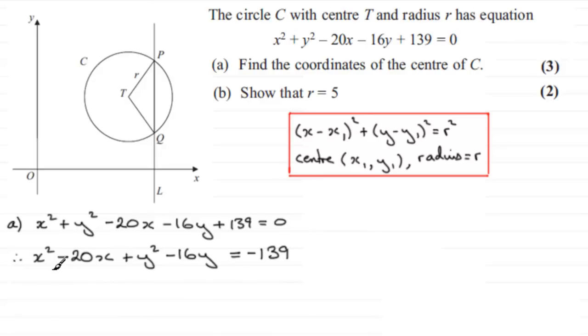But what we do next is we complete the square for these first two terms here, and we complete the square for these two terms here. And again, I'm assuming you're fairly familiar with completing the square. You can always check that out on my website if you're unsure. But on that assumption, what we have is a bracket squared. We write x here and we halve this number here, the coefficient of x. At the moment the coefficient of x is -20, so we halve that and we get -10.